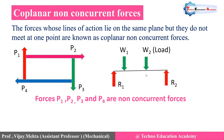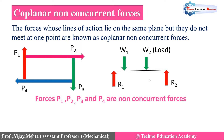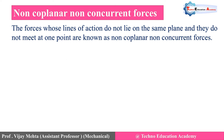An example of co-planar non-concurrent forces is a beam. A simply supported beam is resting on two supports, with reactions R1 and R2, and loads W1 and W2 acting on the beam. Here you can see that all these forces do not meet at the same point, but their line of action lies on the same plane. So this is an example of co-planar non-concurrent forces.